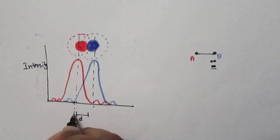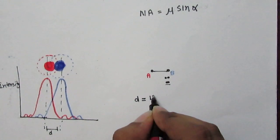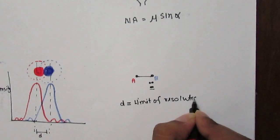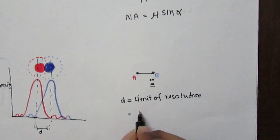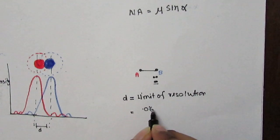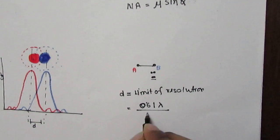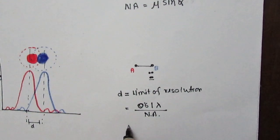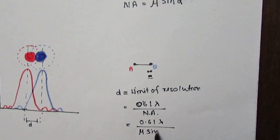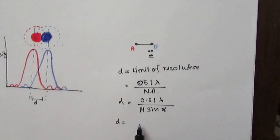The distance between the just-resolved spots is called the limit of resolution, denoted as d. The limit of resolution is defined as a constant times lambda divided by the numerical aperture of the microscope, or we can write it as lambda divided by mu sine alpha, where mu is the refractive index of the medium.